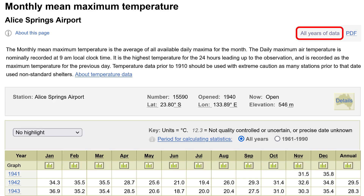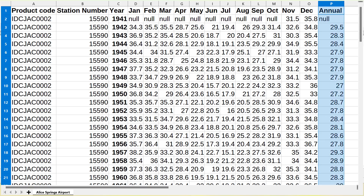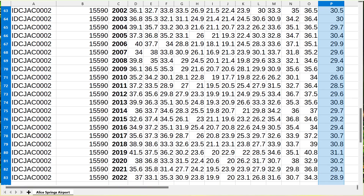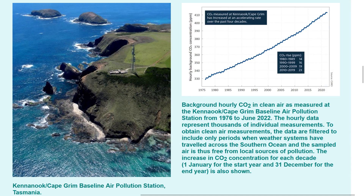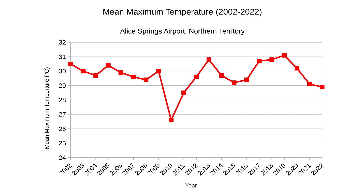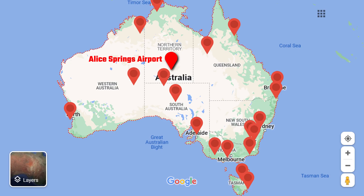What I'm interested in is all years of data in order to download the spreadsheet. Opening that up, we're interested in the Annual Mean Temperatures column, specifically for the years 2002 to 2022. Before we get started, I'd like to point out that according to the Bureau, atmospheric carbon dioxide levels have been increasing consistently over the same 20-year period — keep that in mind. Plotting Alice Springs on a graph with a trend line, the average maximum temperature has stayed pretty much bang on over the last 20 years.